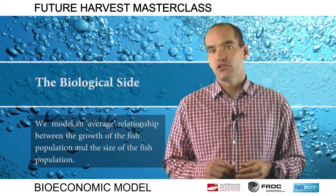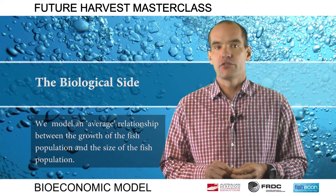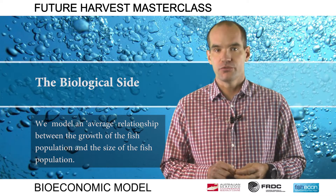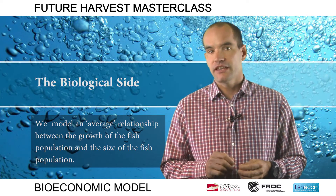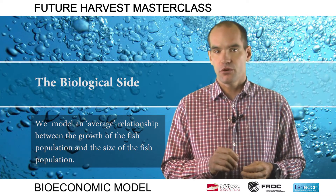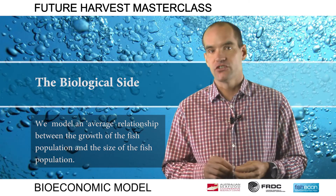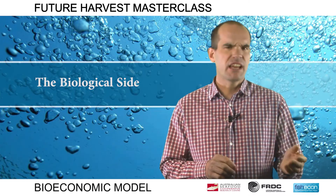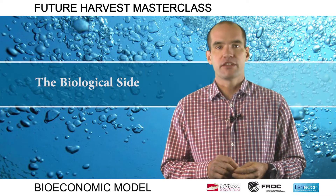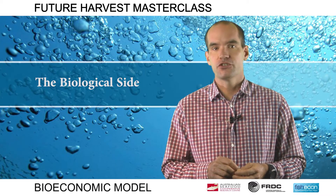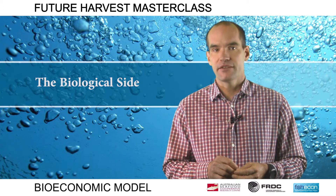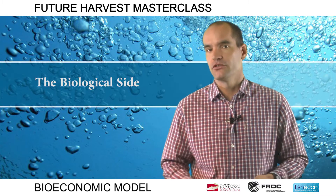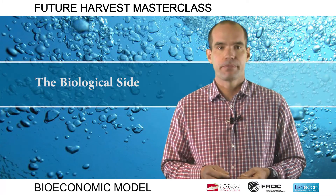As in the previous module, we begin with a description of the biological growth process of fish. We model an average relationship between the growth of the fish population and the size of the fish population. The model does not attempt to characterise the fishery on a day-to-day basis, rather in terms of some long-term average, say yearly or seasonally.